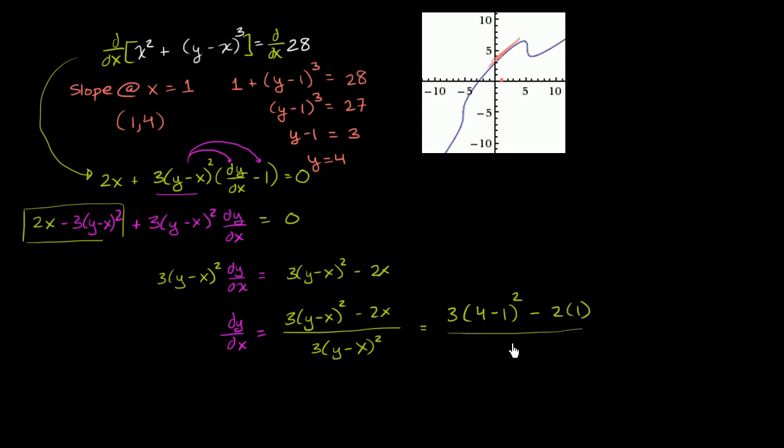Which is equal to, 4 minus 1 is 3. You square it, you get 9. 9 times 3 is 27. You get 27 minus 2 in the numerator, which is going to be equal to 25. And then in the denominator, you get 3 times 9, which is 27. So the slope is 25/27. So it's almost 1, but not quite. And that's actually what it looks like on this graph.